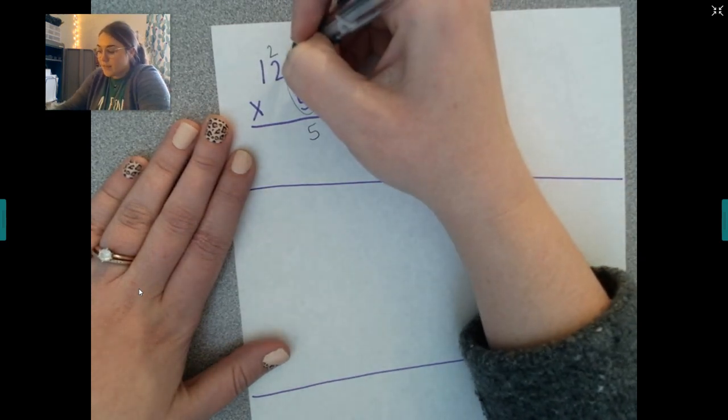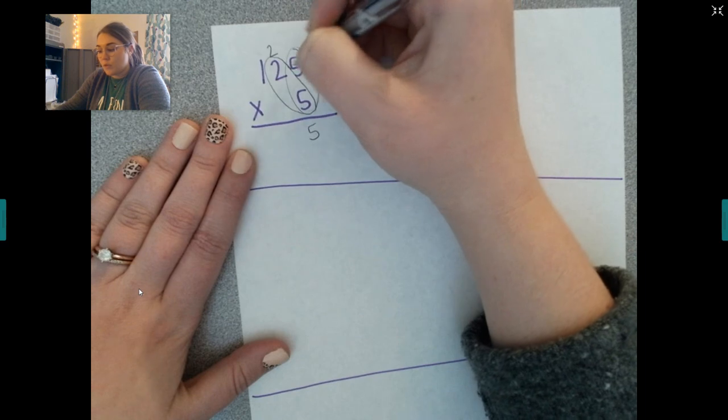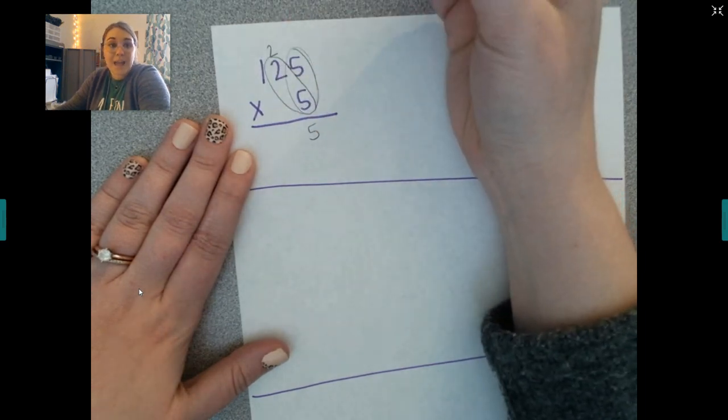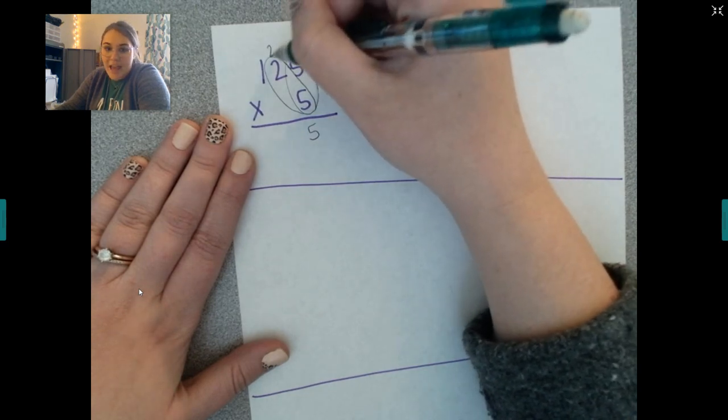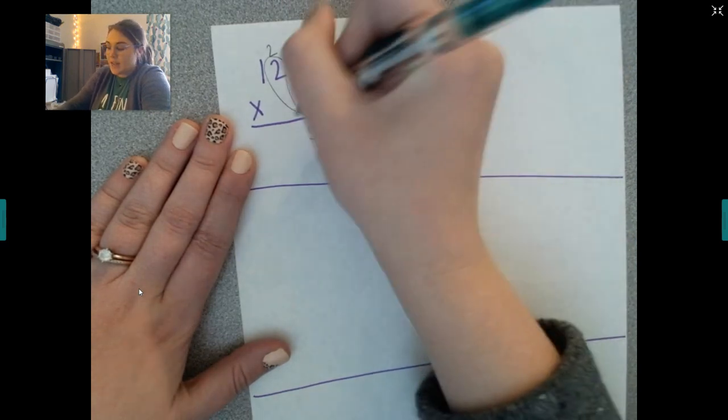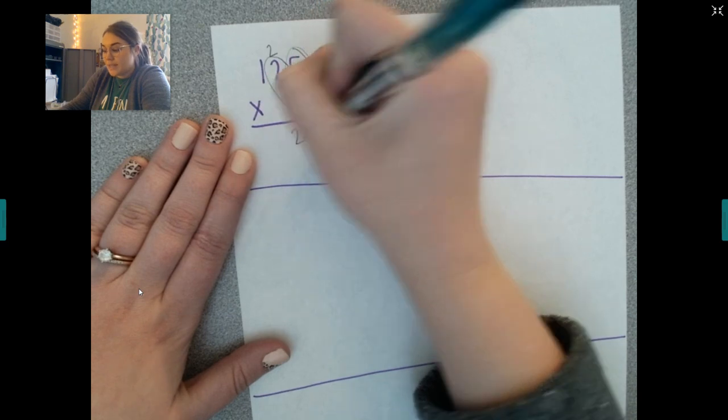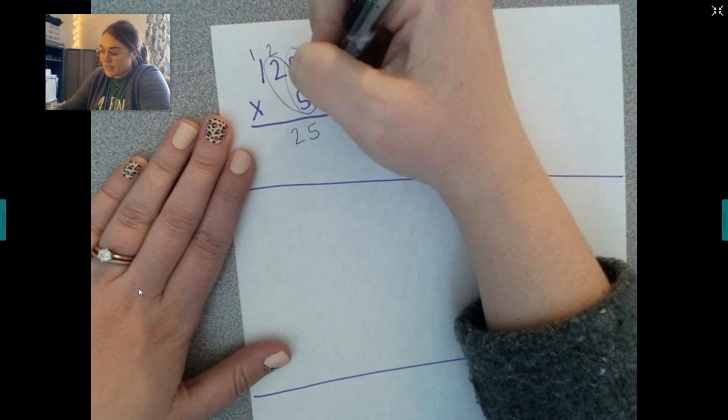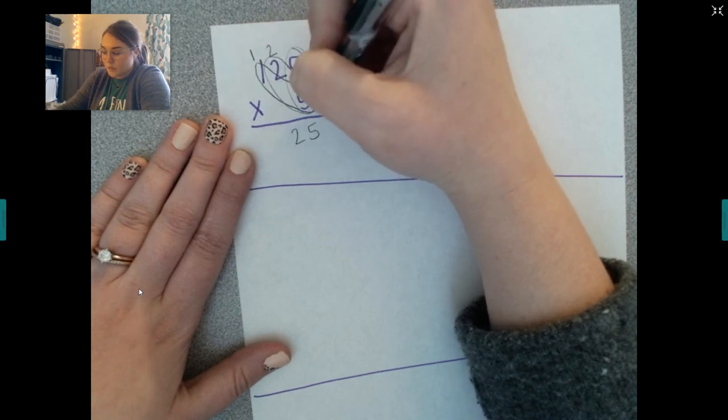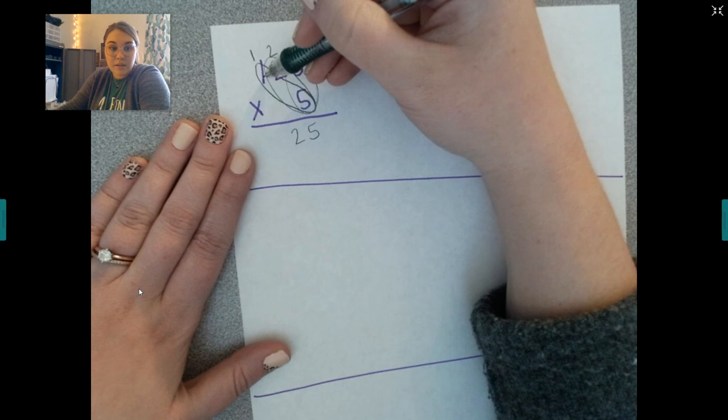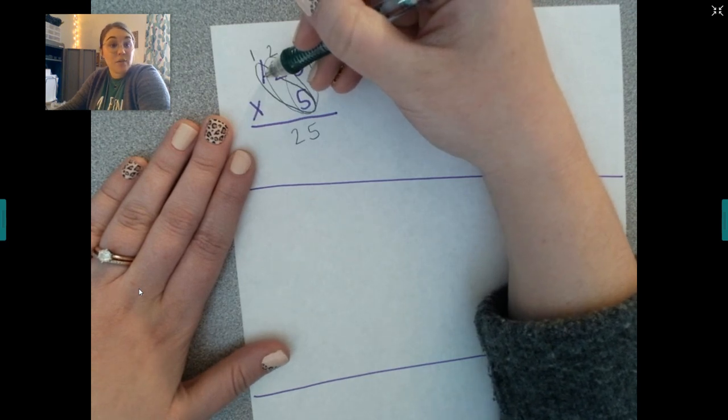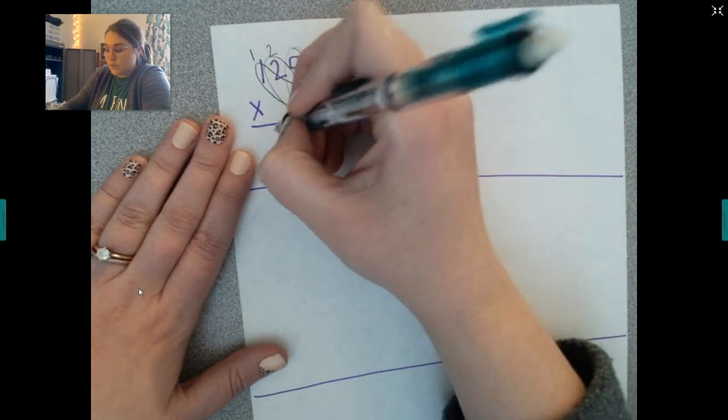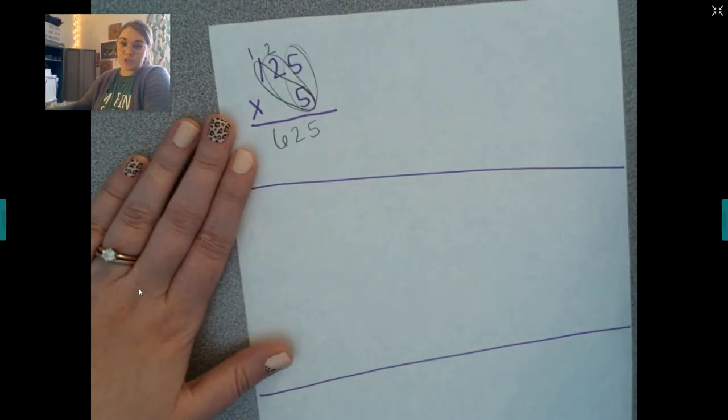Now let's do five times two. Remember, you go right to left. So what's five times two? I hope you said ten and then you have to make sure to add this little number right here and that would be twelve. So you write down your ones place and you carry your tens place. Now let's do our last number. Five times one. What is five times one? Anything times one is itself. So five times one is five and then you add your remainder which is six. So the answer on this one is 625.